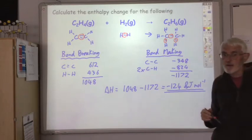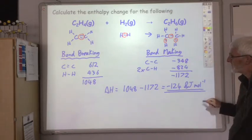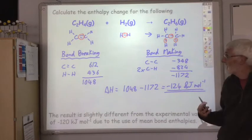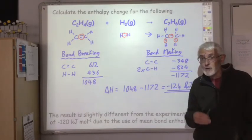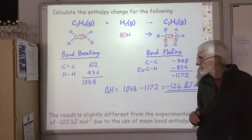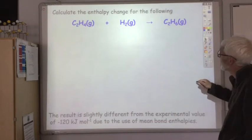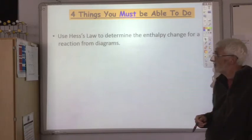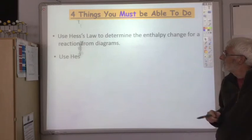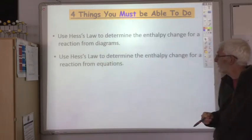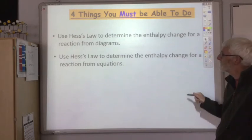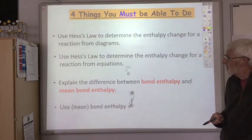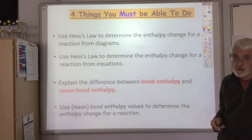If you compare this with the theoretical value, it comes out slightly different — the theoretical value is minus 120 kJ/mol. The difference is due to the fact that in several places in this calculation we used mean bond enthalpy values, which accounts for the slight discrepancy. To summarise, you should be able to use Hess's law to determine the enthalpy change for a reaction from diagrams, explain the difference between bond enthalpy and mean bond enthalpy, and use bond enthalpy values to determine the enthalpy change for a reaction.